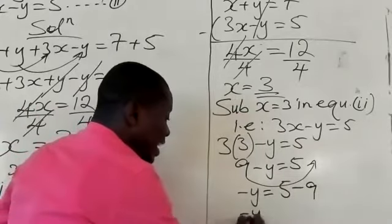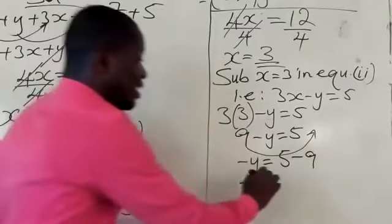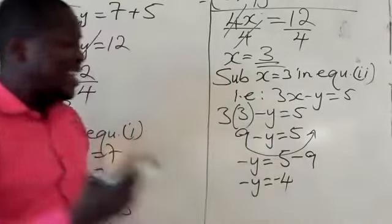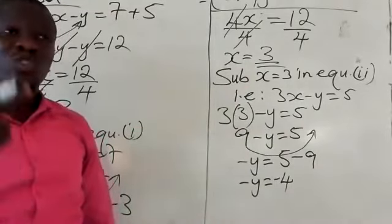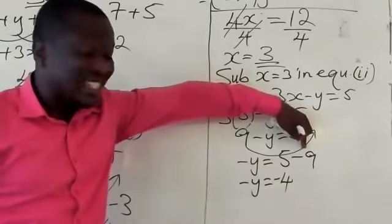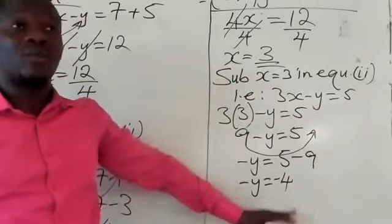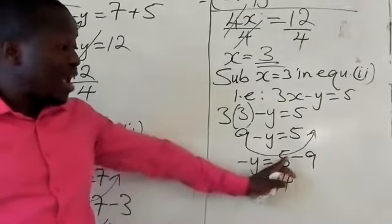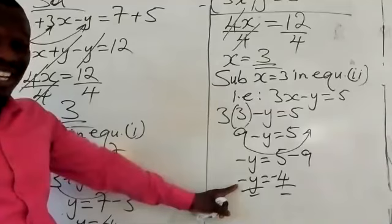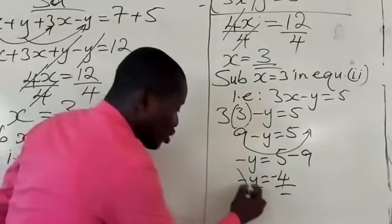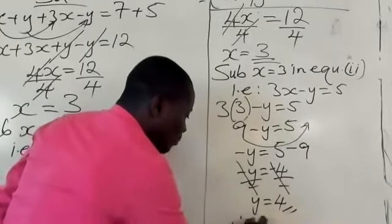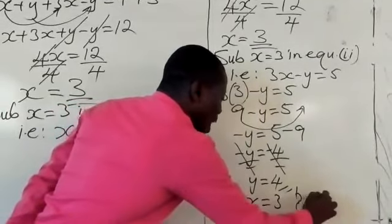So minus y equals 5 minus 9, which is minus 4. You might ask why minus 4? Because 9 minus 5 is 4, and the bigger number is 9, so 5 minus 9 is minus 4. What we need to do is divide both sides by minus 1 to get y on its own. So minus and minus cancel out, and y equals 4. So the answer is x equals 3 and y equals 4.